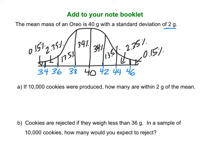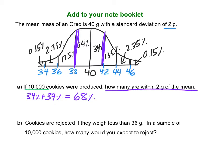If 10,000 cookies were produced, how many are within 2 grams of the mean? Within 2 grams of the mean means from 38 up to 42. First figure out what percent of cookies would be in that region: 34% plus 34% equals 68%. Now find what is 68% of 10,000. Convert 68% to a decimal by dividing by 100, giving 0.68. Then 0.68 times 10,000 gives a final answer of 6,800 cookies.